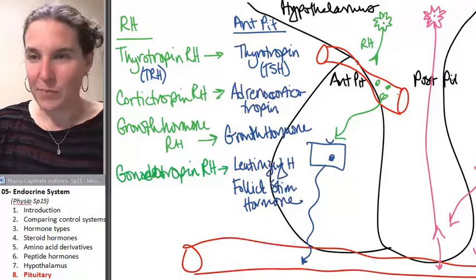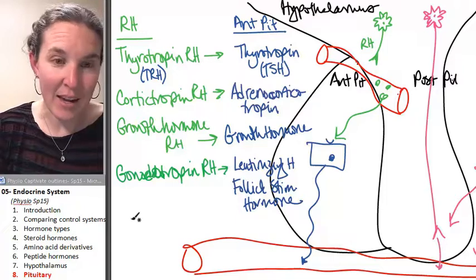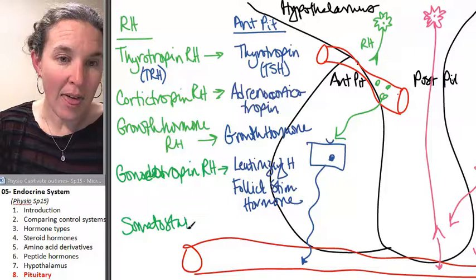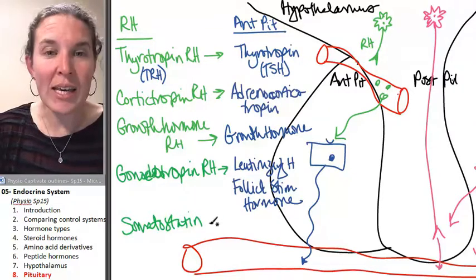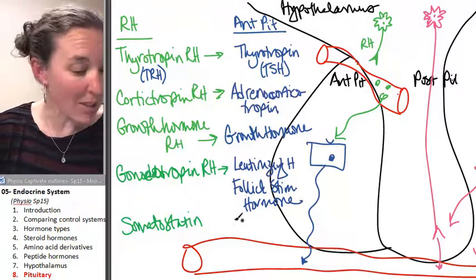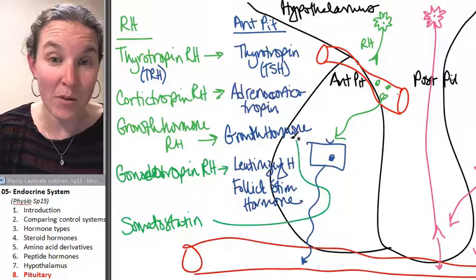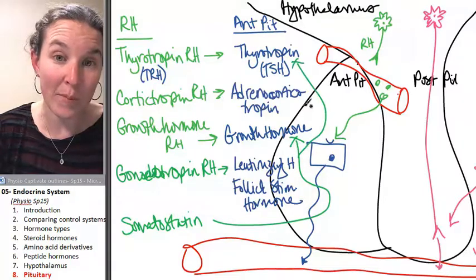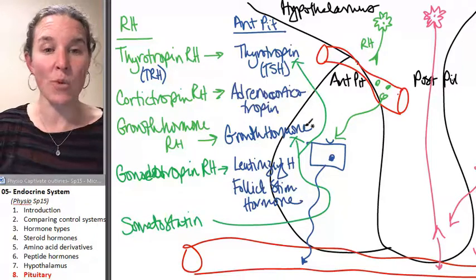I have one more that we have, one called somatostatin. And I'm writing this down so you can see that some of these, like somatostatin, actually inhibits the production of ant pit hormones. So somatostatin actually inhibits growth hormone and thyroid stimulating hormone. So those actually act as, it's a negative message. Don't produce these things.